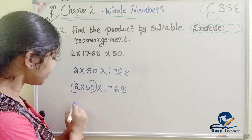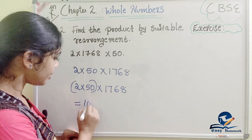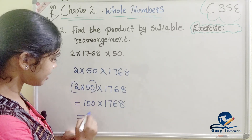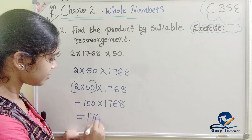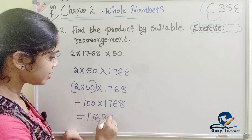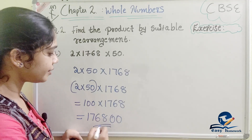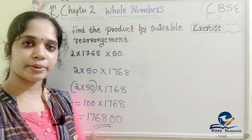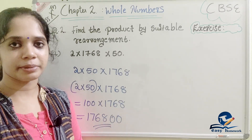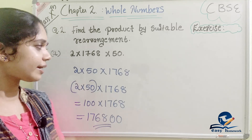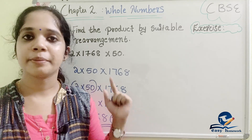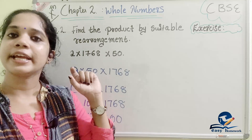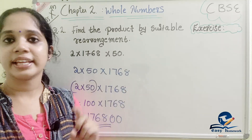We multiply 2 × 50 first to get 100. Then 100 × 1768 gives us 176,800. We get 100 multiplied by the number 1768.